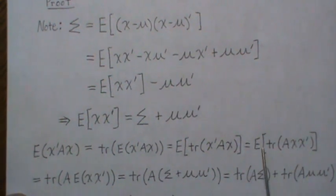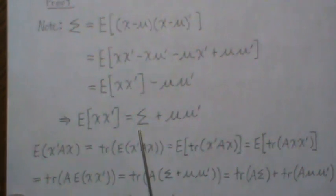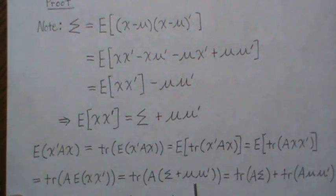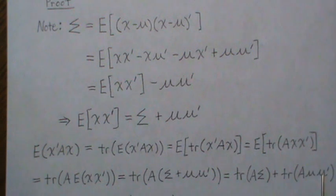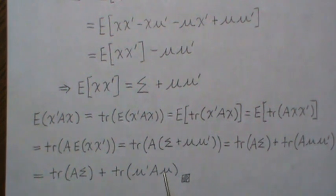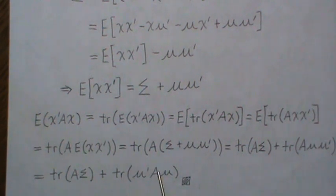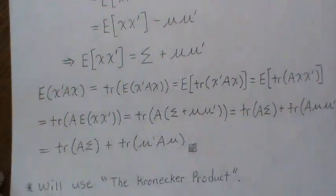When we take the expectation back through, A is a constant, so we're left with E[xx'], which we can replace with sigma plus mu mu prime. Distributing A gives us the trace of A times sigma, plus the trace of A mu mu prime. We can rearrange and move mu prime to the front, and since the final term is a scalar, we can drop the trace, giving us the result.